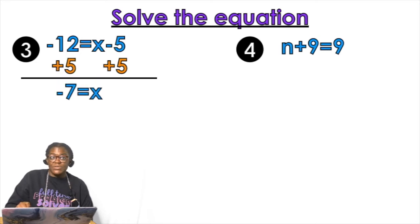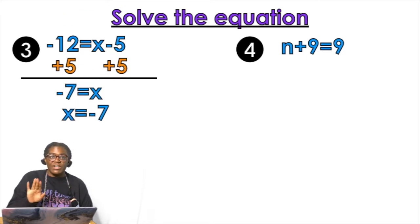Yes. So negative 12 plus five is going to give me negative seven. If I rearrange that it's x equals negative seven. We like that better sometimes.